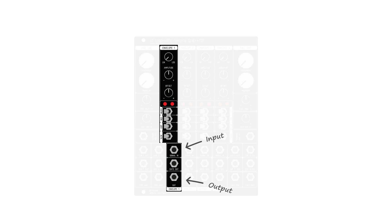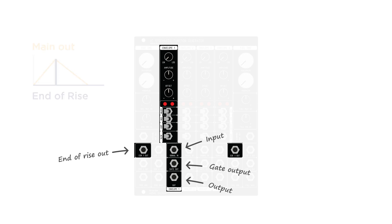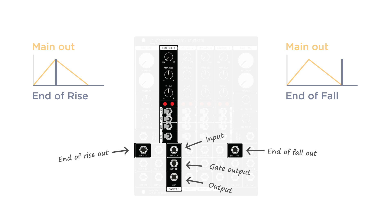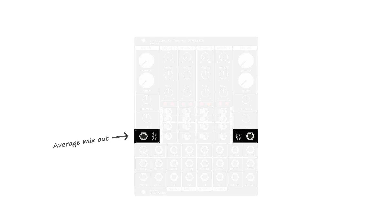Beside the main input and the main output at the bottom, there are three more outputs for each channel to increase the possibilities. There's a gate output, which outputs a gate while in the rise part of the envelope — so in loop mode, this becomes a square wave LFO with variable pulse width, and if you set the minimum and maximum values with a large interval, it becomes a random gate signal. There's an end-of-rise output, sending a short trigger every time the cycle reaches the end of a rise. And finally, an end-of-fall output, sending a trigger every time the cycle reaches the end of a fall stage. There are also two outputs that combine the four channels: one is an average of all channel outputs, and one is the sum of all channel outputs.